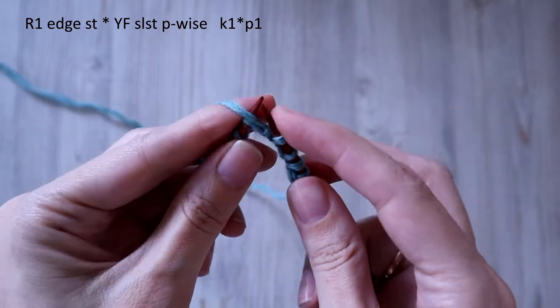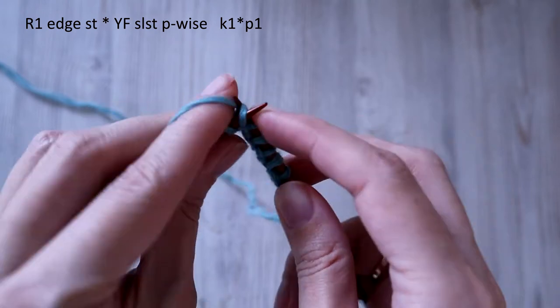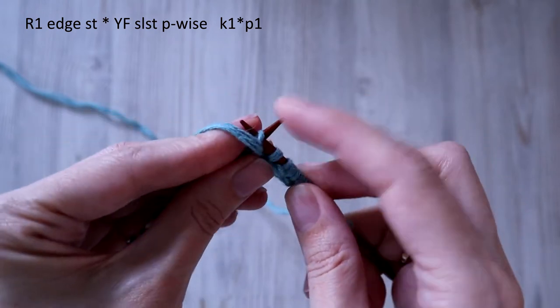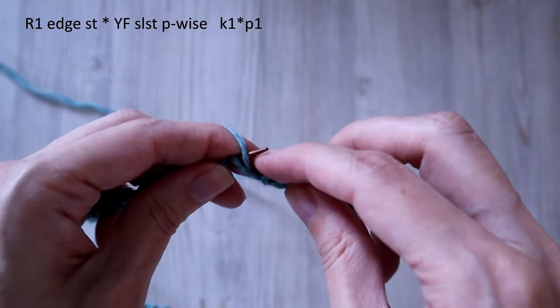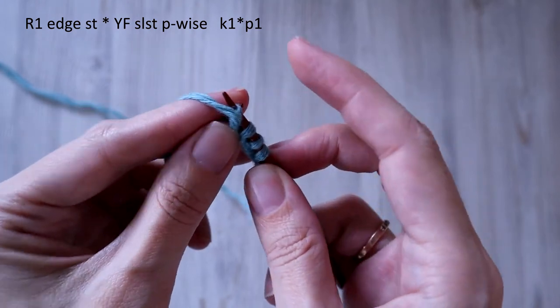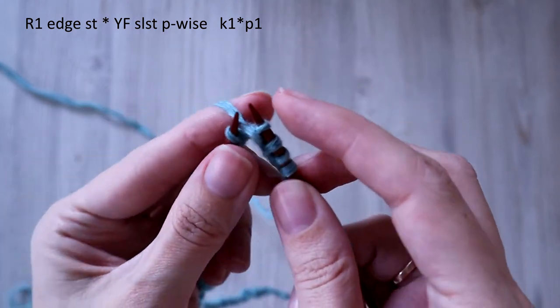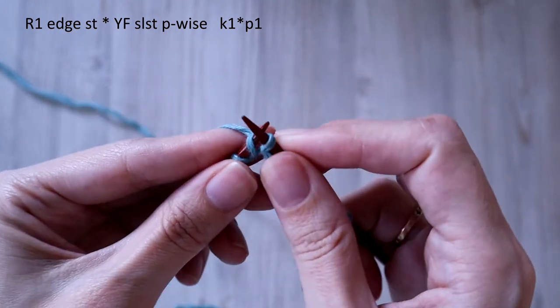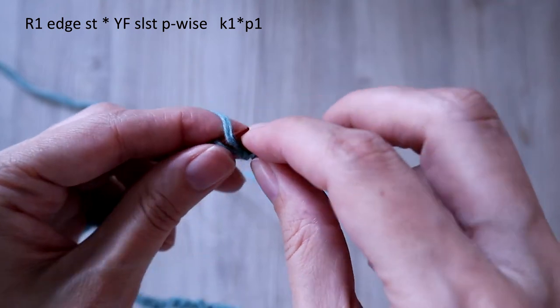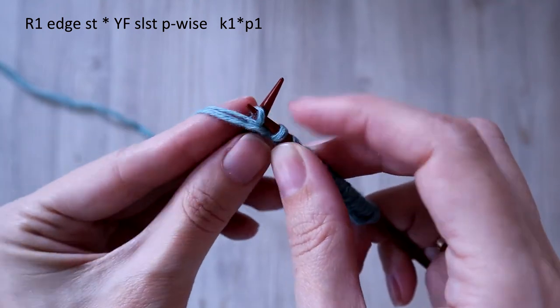If you cast it on an odd number of stitches then start with a purl stitch, not counting the edge stitch. And if you cast it on an even number of stitches then start it with a knit stitch, not counting the edge stitch.